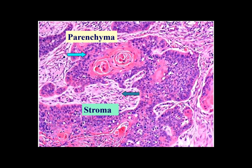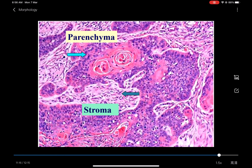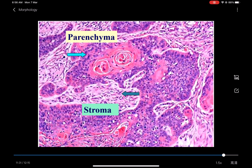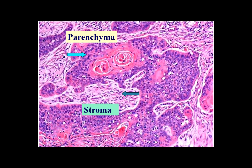In this slide, we can find two components. This is the squamous cell carcinoma. This is the parenchyma — made up of neoplastic cells, which are immature at the cellular or tissue structure level. And this is the stroma — its components contain fibrous tissue, blood vessels, lymphatic vessels, and sometimes immune cells such as lymphocytes.